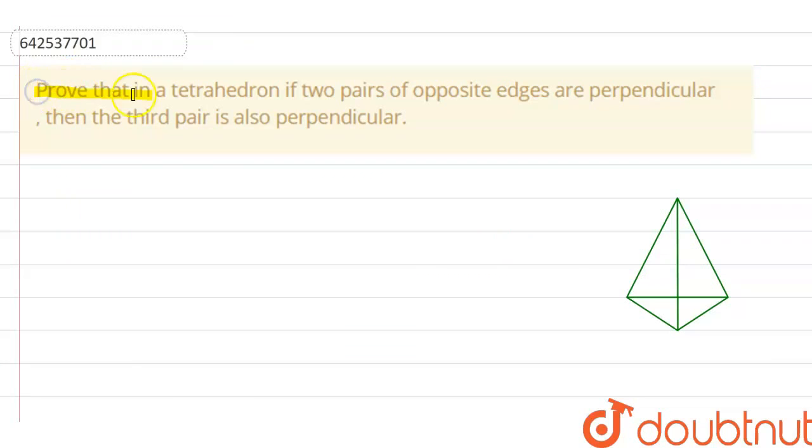The question is, prove that in a tetrahedron, if two pairs of opposite edges are perpendicular, then the third pair is also perpendicular.